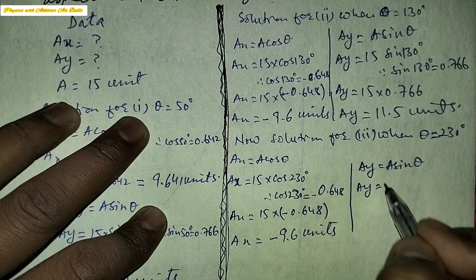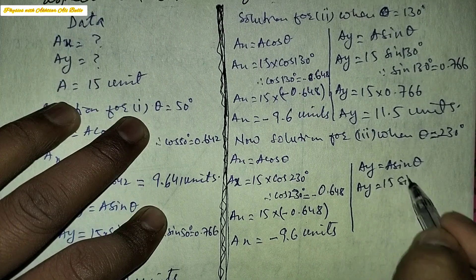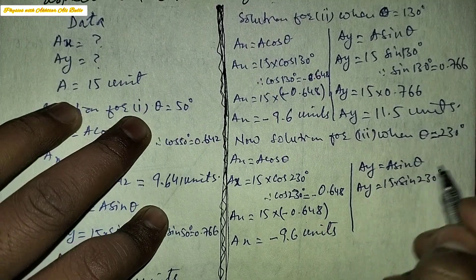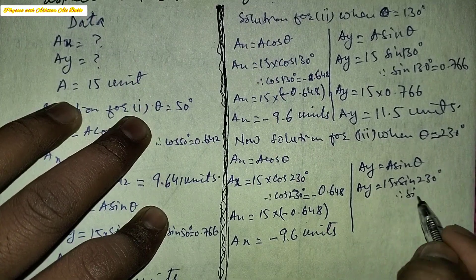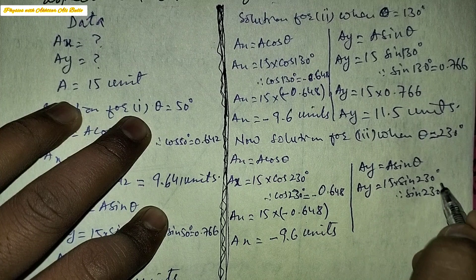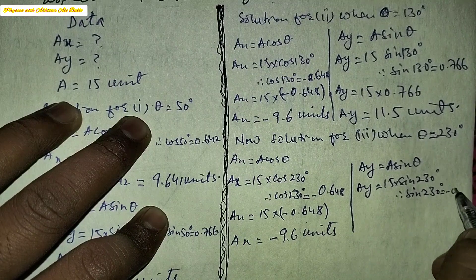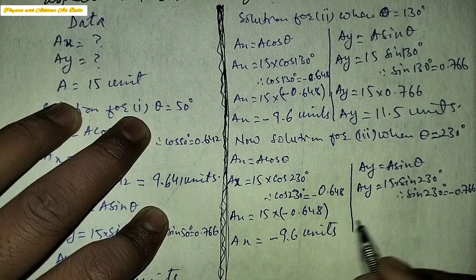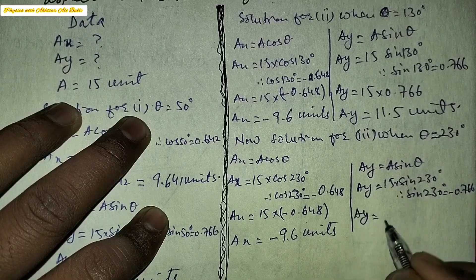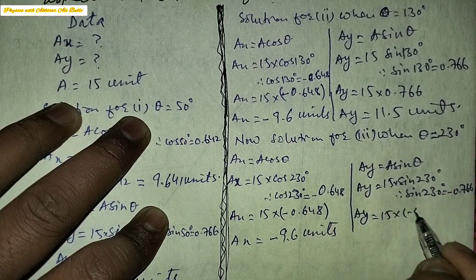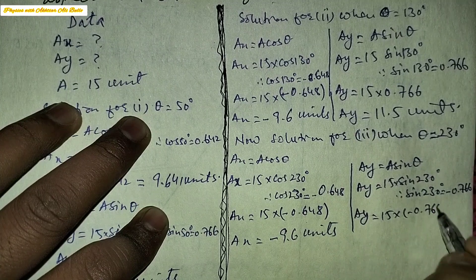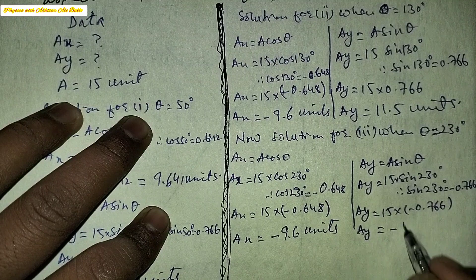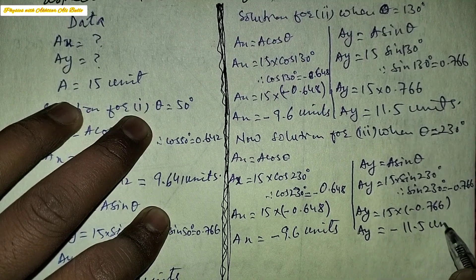For the Y component, Ay is equal to A sin theta, so Ay is equal to 15 into sin 230°. The value of sin 230° is minus 0.766, so Ay will be obtained as minus 11.5 units.